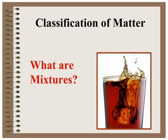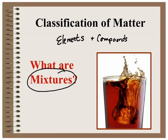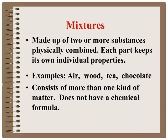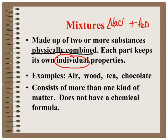Once you're finished with your pure substances, and the only two pure substances that you have to worry about are elements and compounds, now let's talk about mixtures. Mixtures are made up of two or more substances physically combined. Physically combined means each part keeps its own individual properties. So if you put sodium chloride with water, you make salt water. But the salt and the water keep their separate individual properties. Examples of mixture like air, wood, tea, chocolate. These substances do not have chemical formulas.